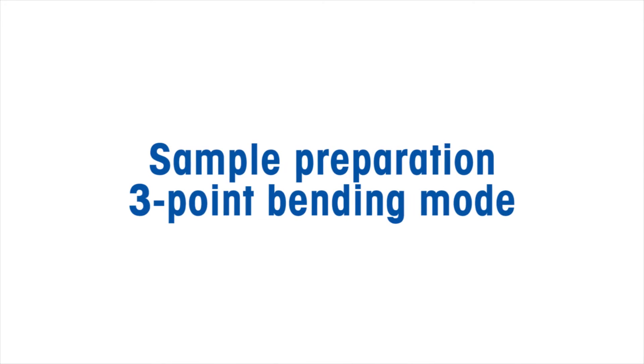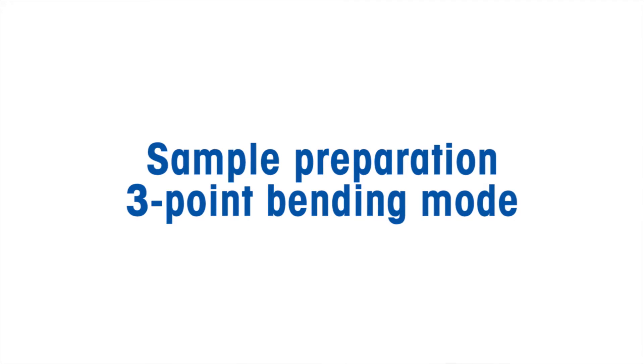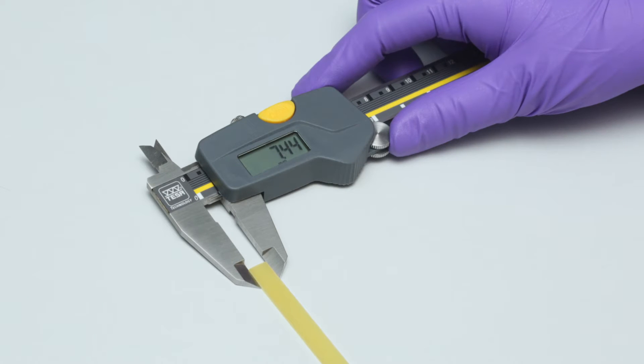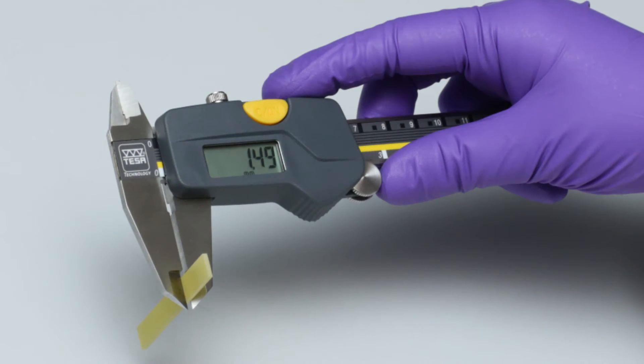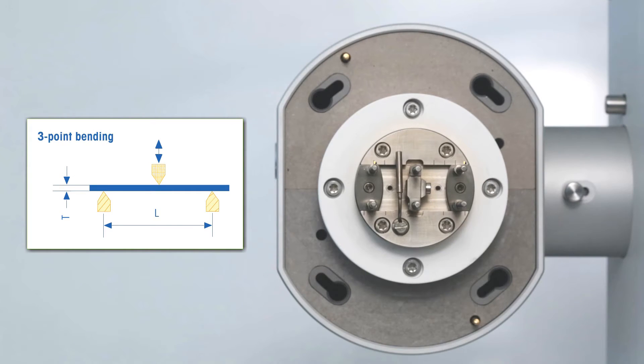Let's start with the sample preparation for 3-point bending mode. First, we can measure the PCB sample's width and thickness with a vernier caliper. The sample length is given by the distance of the outer clamps.